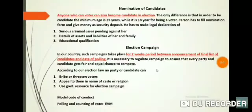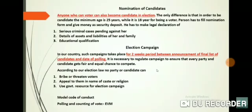Today's topic is the nomination of candidates. Firstly, how does the nomination of a candidate take place? Anyone who is a voter can also become a candidate in an election. The only difference is that to be a voter, the minimum age is 18 years, while to be a candidate in an election, the minimum age is 25 years.